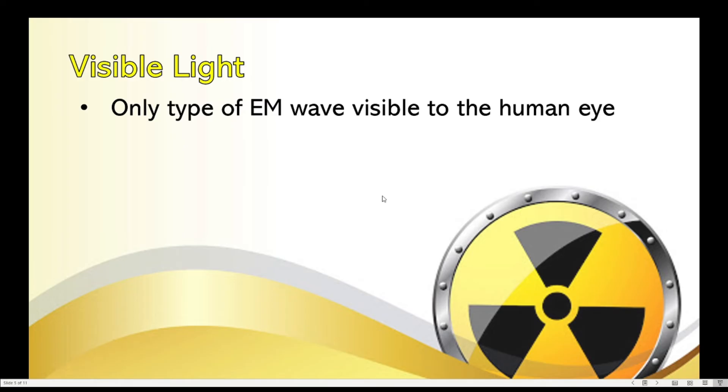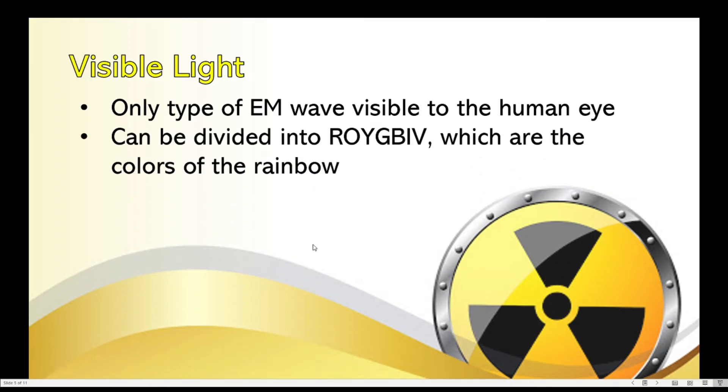Visible light is the only type of electromagnetic wave visible to the human eye. That's why it's called visible light. It can be divided into seven component colors which we know as ROYGBIV.